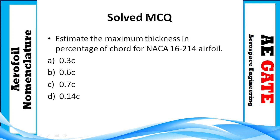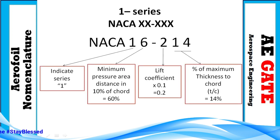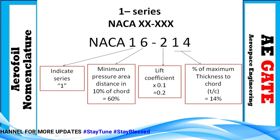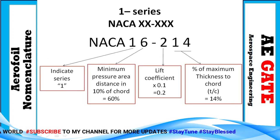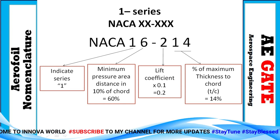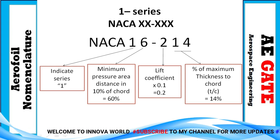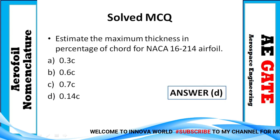MCQ 5: Estimate the maximum thickness as a percentage of chord for NACA 16-214 airfoil. The hyphen indicates this is a one-series airfoil. The last two digits represent the maximum thickness-to-chord ratio, which is 14%. So the correct answer is option D — 14%.